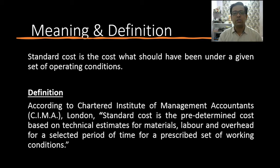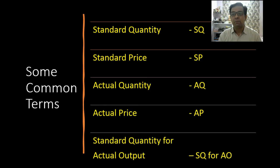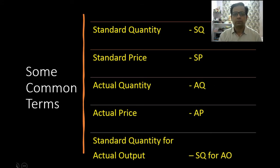In this video we are going to learn various variances related to material cost. The first key term is SQ, or standard quantity — the amount of material needed to produce one unit of finished goods. Then we have SP, standard price — the predetermined price at which we assume we can buy material. Then AQ, actual quantity — what we actually used in production. And AP, actual price — what we actually paid, for example 9.5 or 10.25.